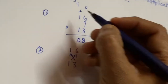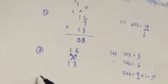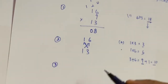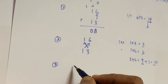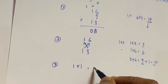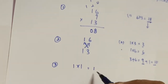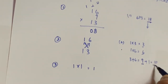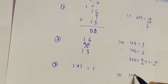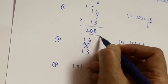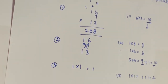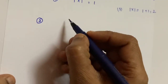The third step is to multiply the tens place digits: 1 into 1 equals 1. To this we add the carry-over, giving us 2. So the final answer is 208. Now let's take another example: 21 multiplied by 13.